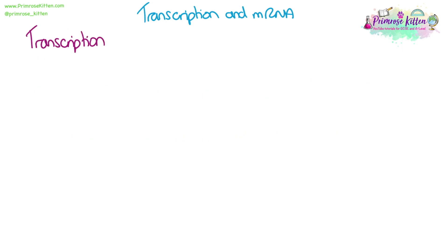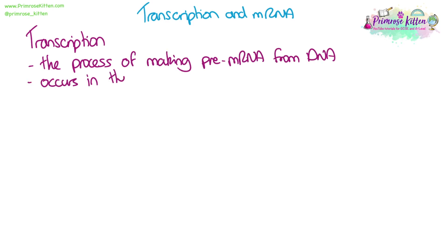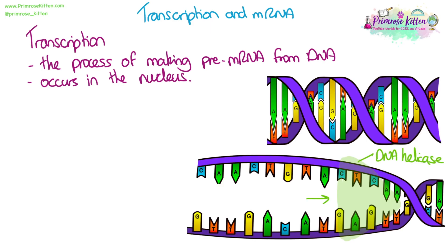Transcription. We're going to go through the actual step-by-step process of transcription now, and all of the language we're going to use here is really important. If we're going to write this out as a long answer question in the exam, we need to make sure our language is on point so we hit the mark scheme. Transcription is the process of making pre-mRNA from DNA. We'll explain what the difference between pre-mRNA and normal mRNA is later, but for now that's our definition, and it is occurring in the nucleus.